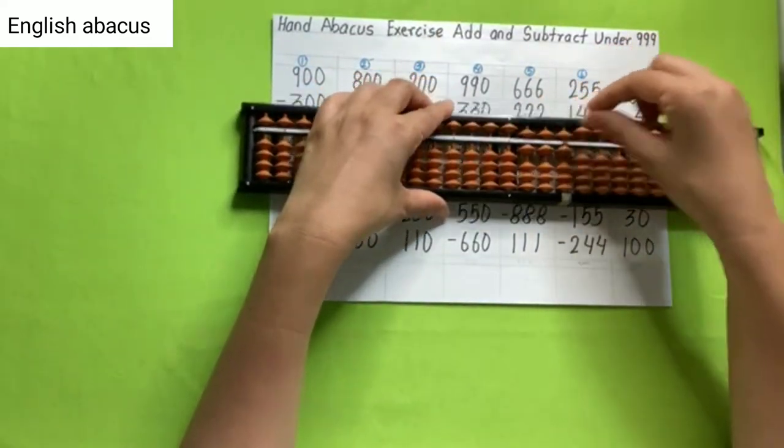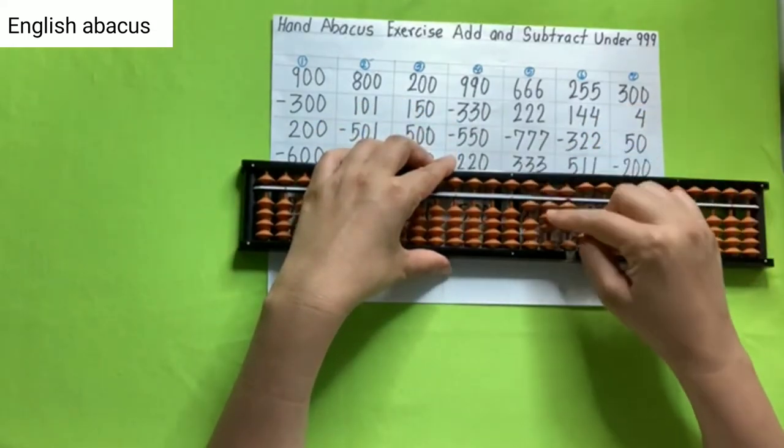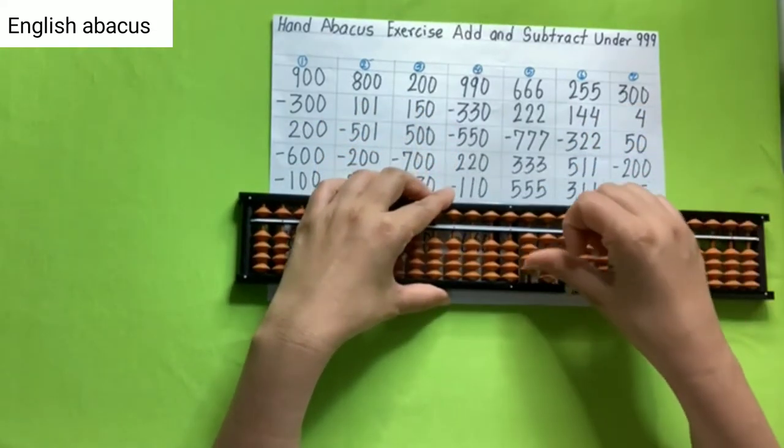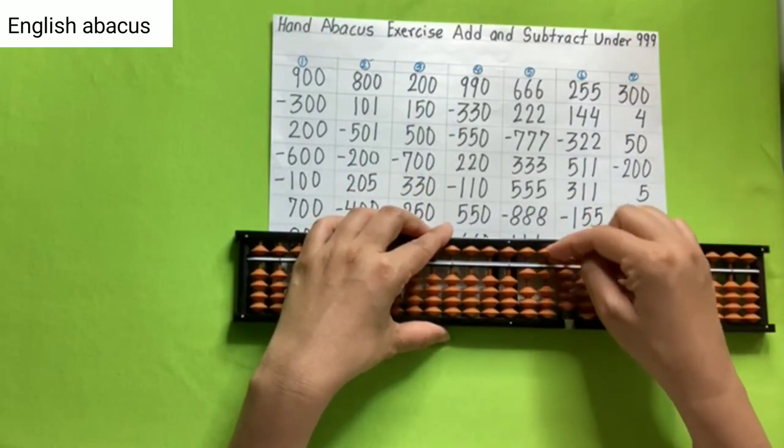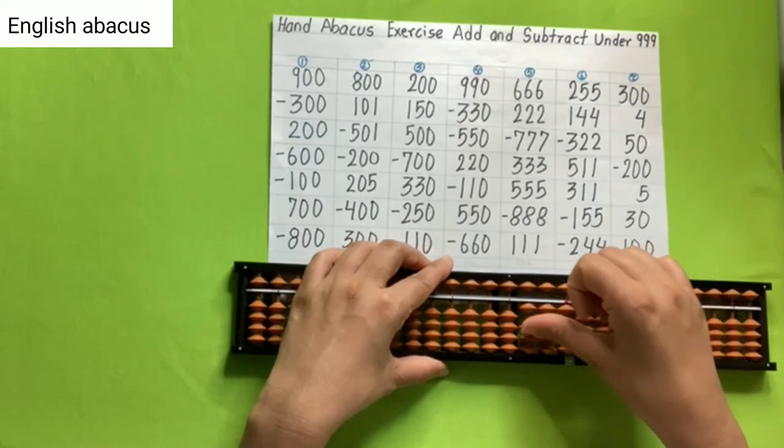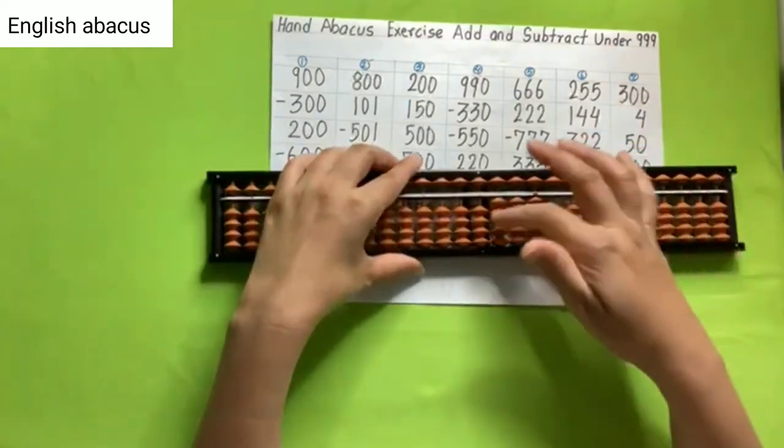Add 660, add 222, reduce 777, add 333, add 555, reduce 888, add 111, and your answer is 222.